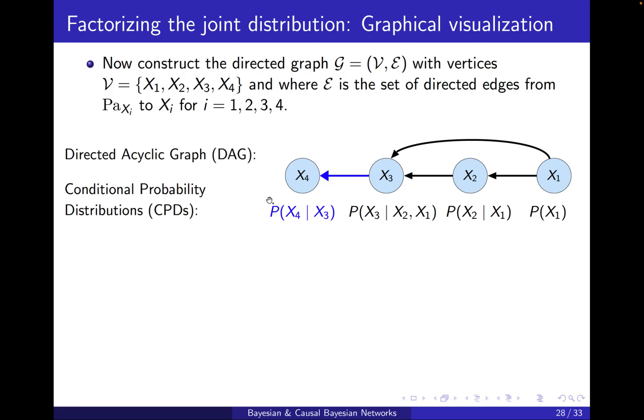If we additionally write down or specify the corresponding CPD to each term, then we will end up with the so-called Bayesian network. A Bayesian network is a pair of a graph and the corresponding CPDs. We will later formally define it, but this is essentially what Bayesian nets are.